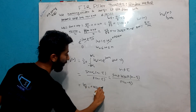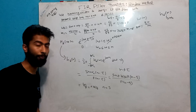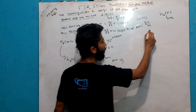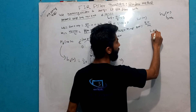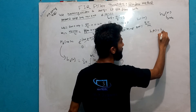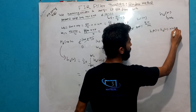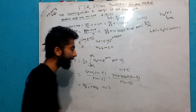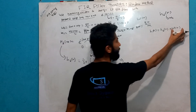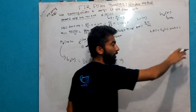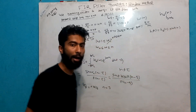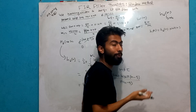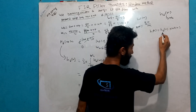For n minus tau equals zero, that is when n equals tau equals 5, h(n) equals omega c divided by π, which is 0.7636. This is the value at n equals tau.